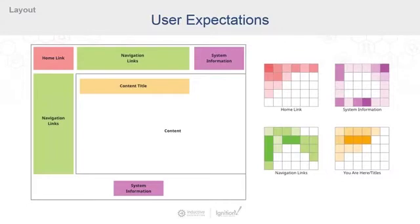First, shown in red, is our home link or logo. Based on these maps, users usually expect this element to be in the very top left corner of your application.